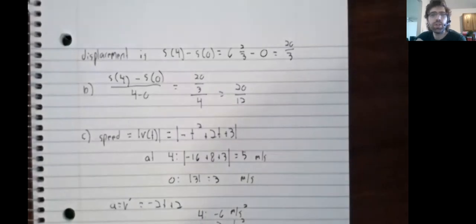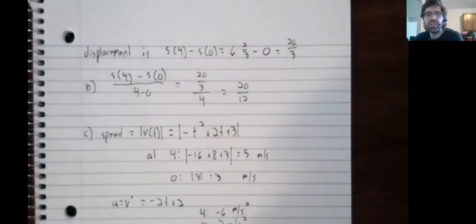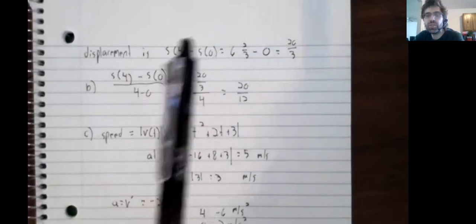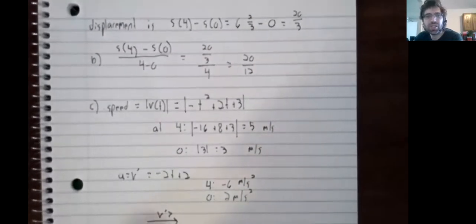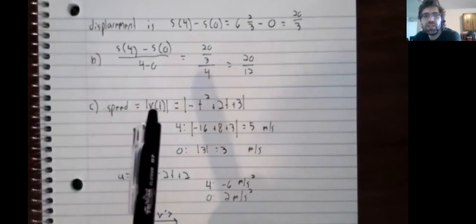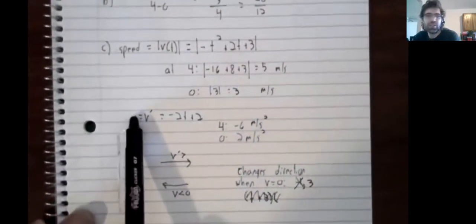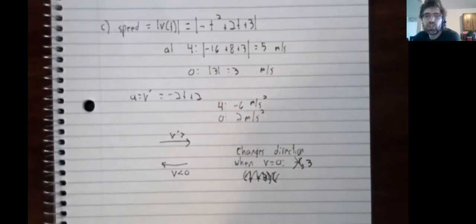It's been a while, but there was a full section more or less on this material. The displacement over an interval is the end position minus the initial position. Average rate of change is the foundation of differential calculus. In this case, that's the average velocity. For some reason, this problem doesn't explicitly ask about the velocity. But the speed is the absolute value of the velocity.